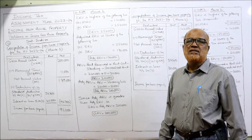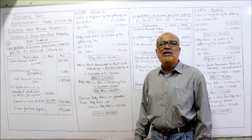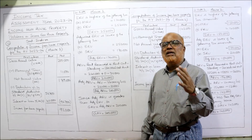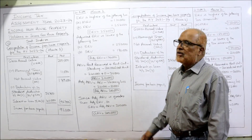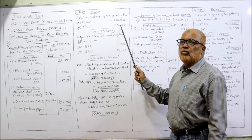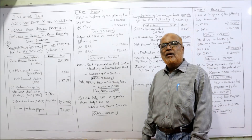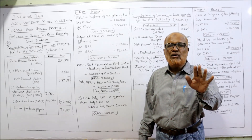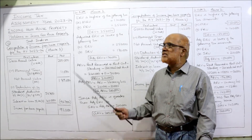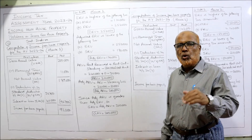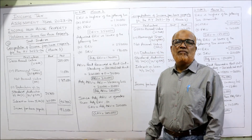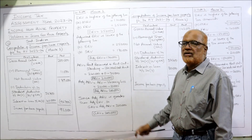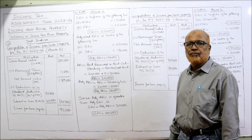In the working note we calculate the GAV. For calculating GAV, first we need ERV — Expected Rental Value — which is the higher of MRV and FRV. Municipal rental value is 1,10,000 and FRV is 2,52,000; whichever is higher, 2,52,000 is the ERV. Now we calculate adjusted ERV because SRV is given. Adjusted ERV is the lower of ERV or SRV. ERV is 2,52,000 and standard rental value is 1,70,000; the lower is 1,70,000. That is the adjusted ERV.